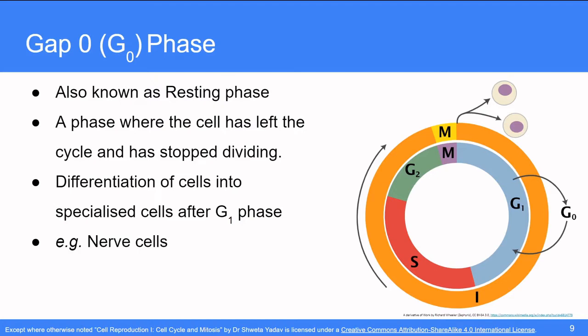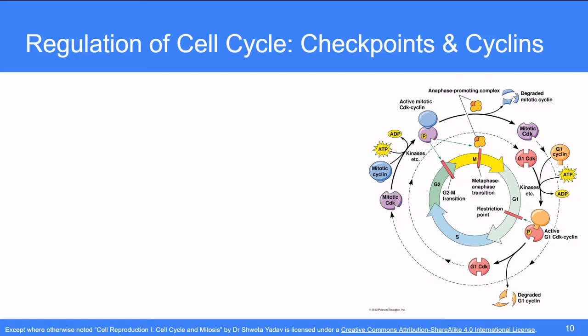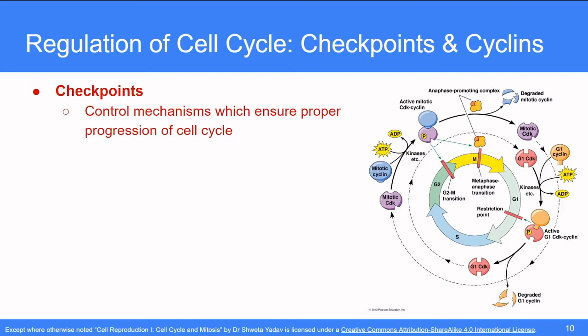Until now, we have seen the different phases of the cell cycle but have you ever wondered what makes the cell divide? What are the mechanisms that ensure the fidelity of the whole process as even the smallest mistakes in this process can lead to serious consequences like cancer? Let us now have a look at how the cell cycle is regulated. The regulation of cell cycle takes place through the checkpoints and cyclins. These checkpoints are the control mechanisms which ensure proper progression of the cell cycles. These are the points in the cell cycle where the conditions of the cell are assessed and also if the cell is not ready for the next step, they also act as the potential termination point.